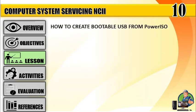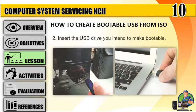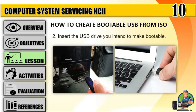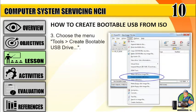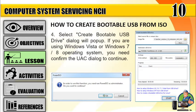How to create a bootable USB from PowerISO. Step 1: Run PowerISO. Step 2: Insert the USB drive you intend to make bootable. Step 3: Choose the menu Tools tab and select Create Bootable USB Drive. Step 4: A dialog will pop up. If you are using Windows Vista or Windows 7/8 operating system, you need to confirm the UAC dialog to continue.